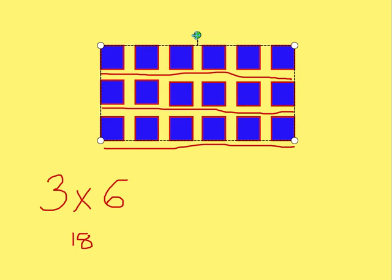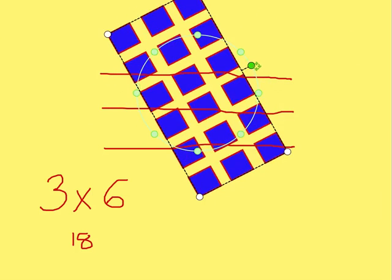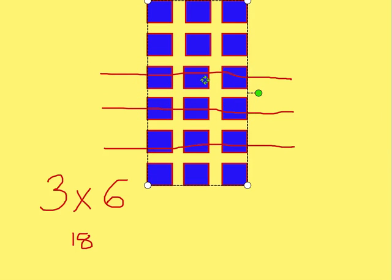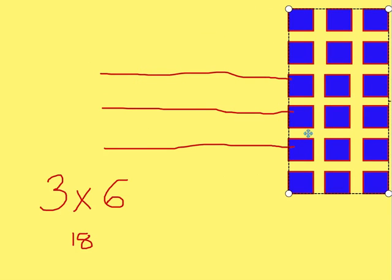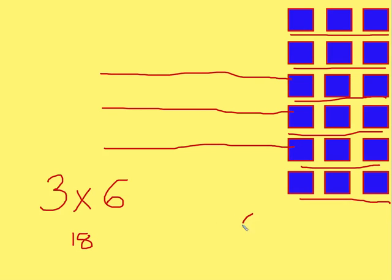Now, if I do this to my array, did I change how many squares there were? No, all I did was twist it around, but what I have now is a very different multiplication problem. Let's see what we have. Count how many rows you have: 1, 2, 3, 4, 5, 6. Notice this time I have 6 groups, so I'm going to start my multiplication problem as 6.